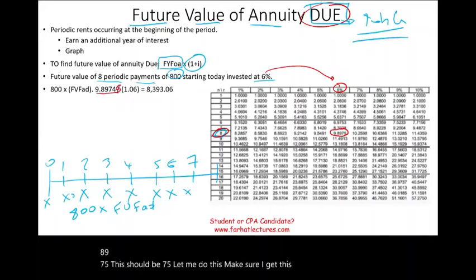Sometimes you might have to find the number of payments — the number of periodic rent periods. Assume your goal is to have $120,000 by making $9,615 deposits at the end of each year. You can earn 8% on your money compounded annually. How many deposits do you need to make?